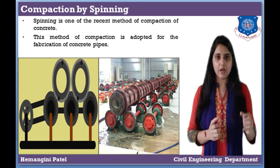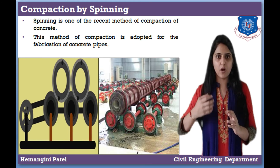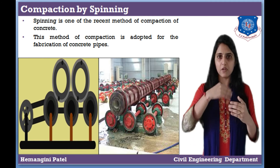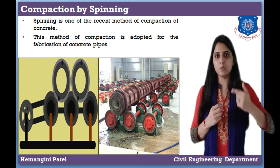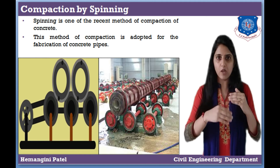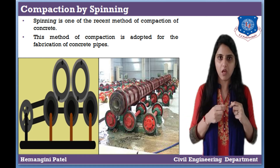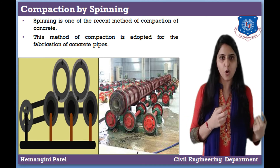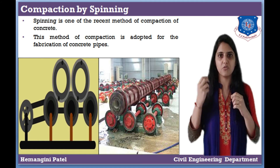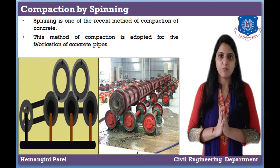The next method is compaction by spin, which is recently used to compact concrete. First, we rotate the spinner at low speed until the mold is fully filled. When it is fully filled, we increase to high speed, which removes extra water. After that, the speed is reduced and we sprinkle dry cement to provide compaction.